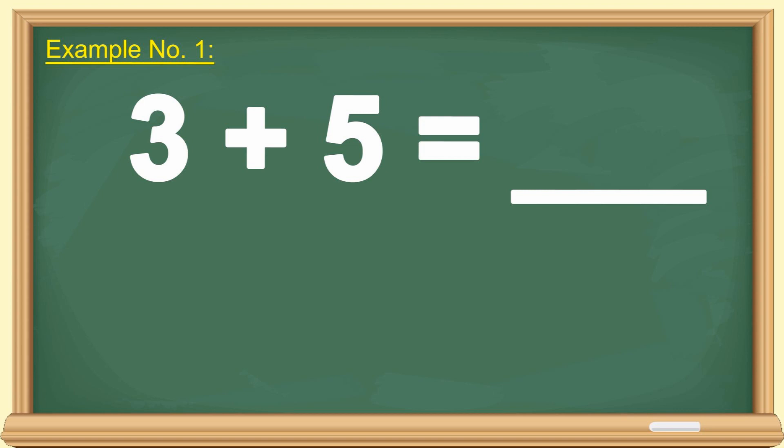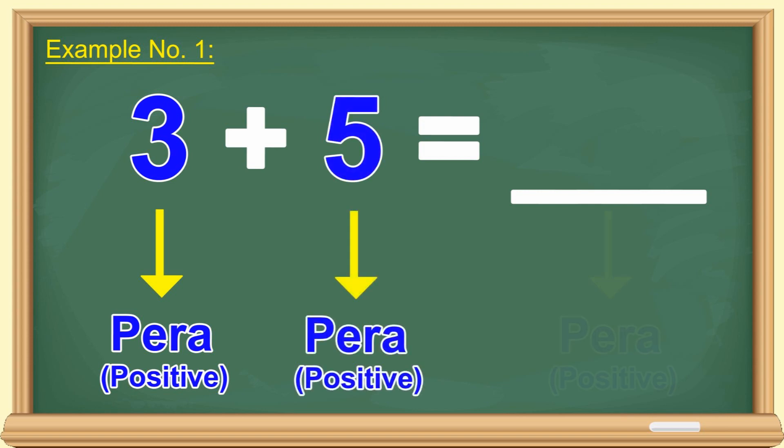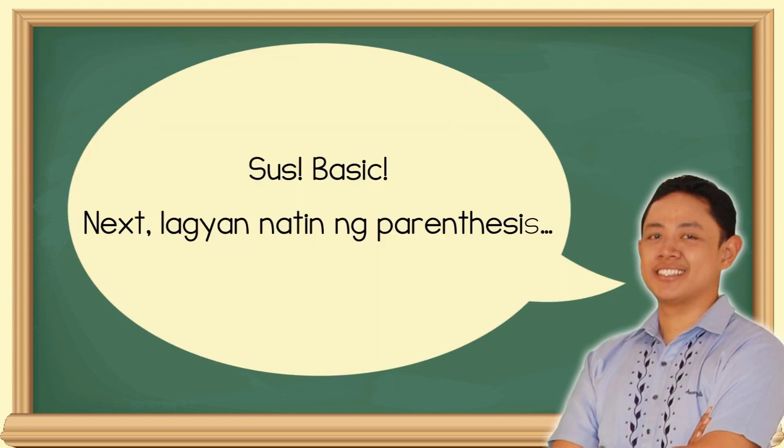First example: 3 plus 5 is equal to blank. Kung meron kang tatlong piso, at dinagdagan mo pa ng limang piso, magkano na ang pera mo? 8 pesos. Sus basic.